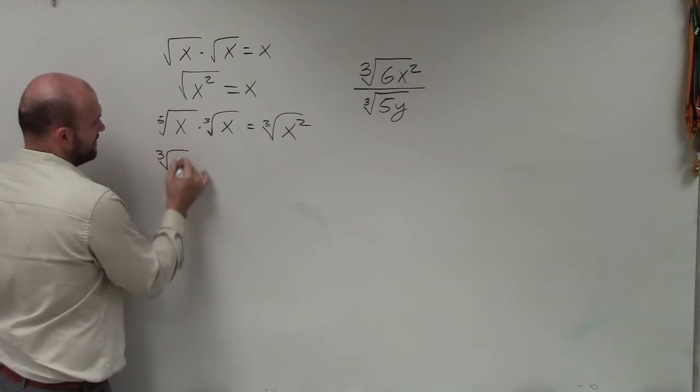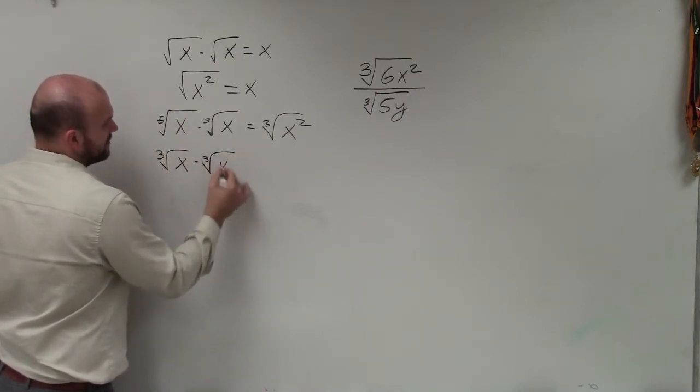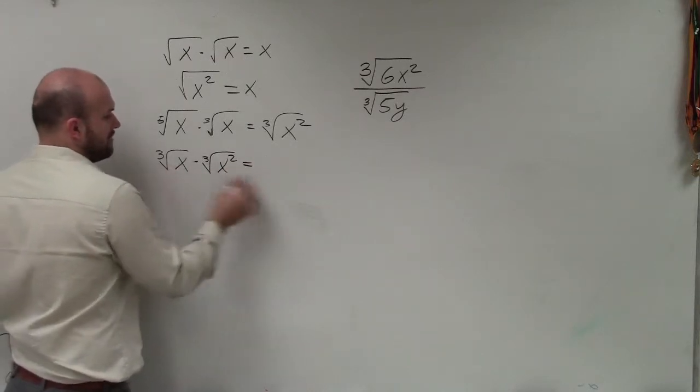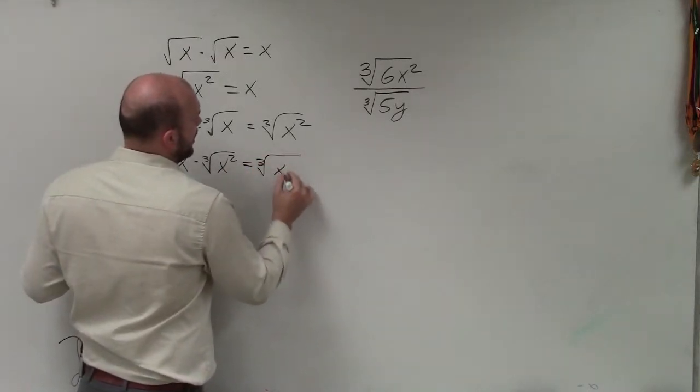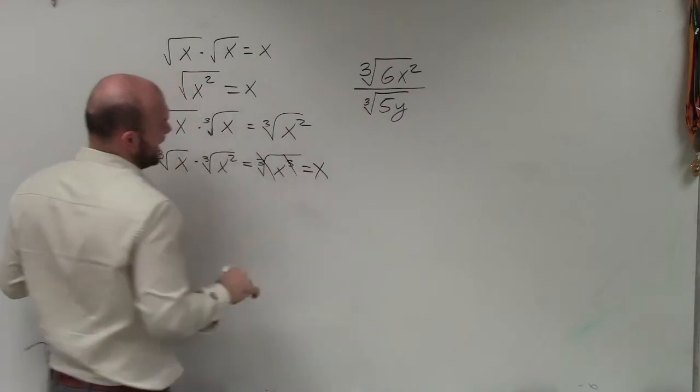I want to be able to multiply that by the cube root of x squared. Because now, when I multiply these, I get the cube root of x cubed, which now is going to equal x.